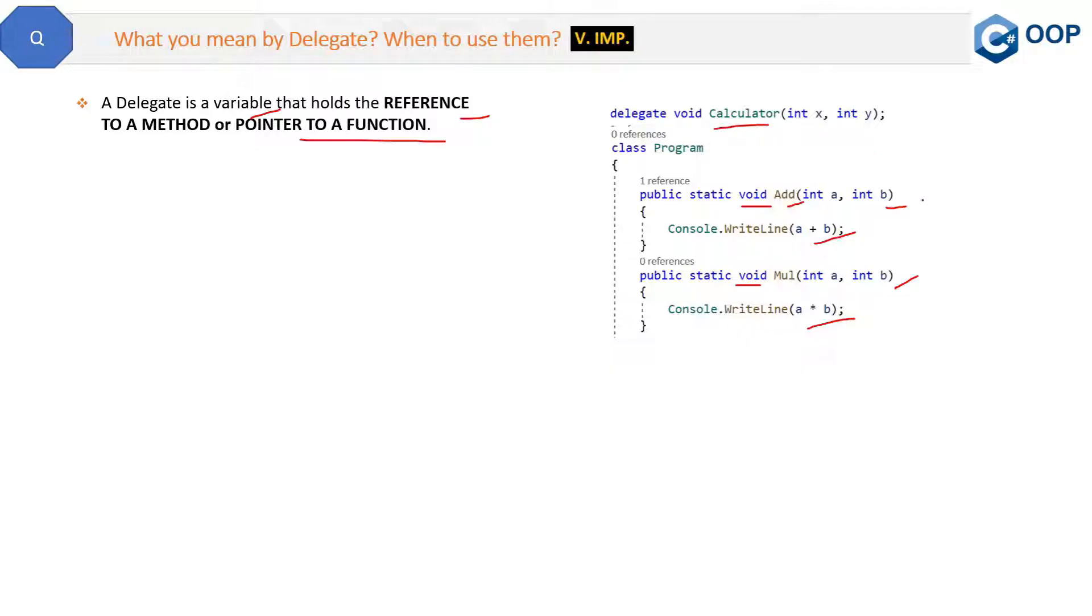Calculator delegate over them. So see, you have this Add method, Multiply method, and we can use a Calculator delegate, which is, you can also say, a wrapper over them which any client can use.